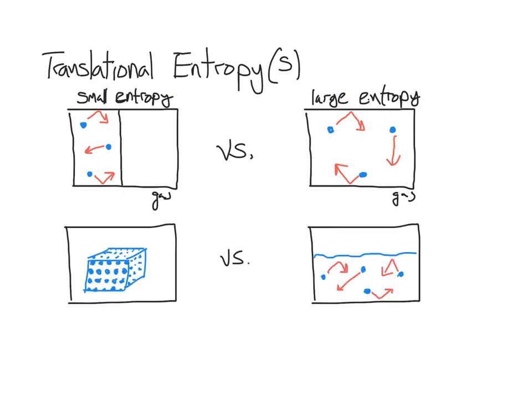Let's look at the translational entropy for a solid. Translational energy is the motion of molecules. In a solid, the particles — the atoms or molecules — are locked into position, so they cannot translate. There's no translational energy to be dispersed or spread out in the system; therefore, the entropy is very low. Compare that to the liquid state: the molecules can move in three-dimensional space and translate relative to each other. So the solid has a low entropy compared to the liquid state, which has a larger entropy.